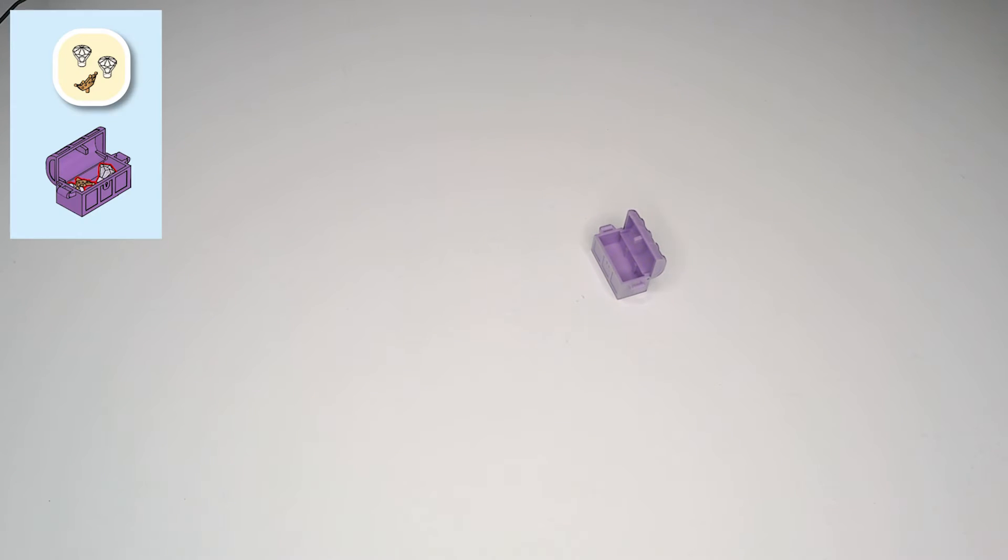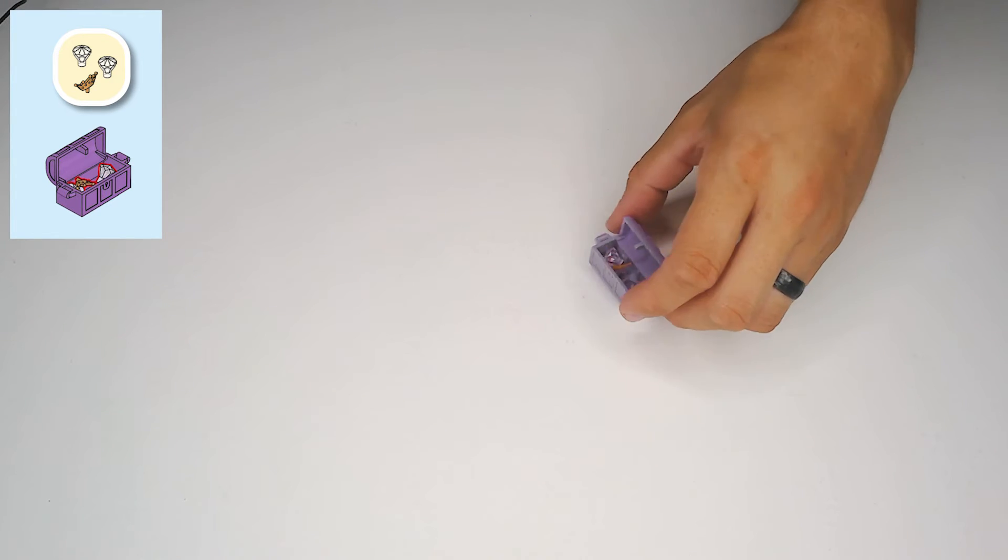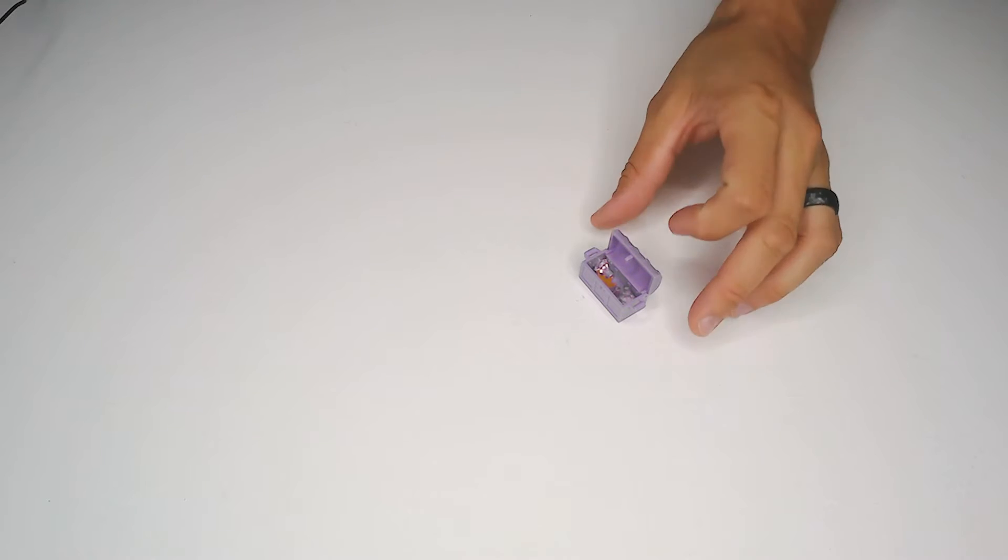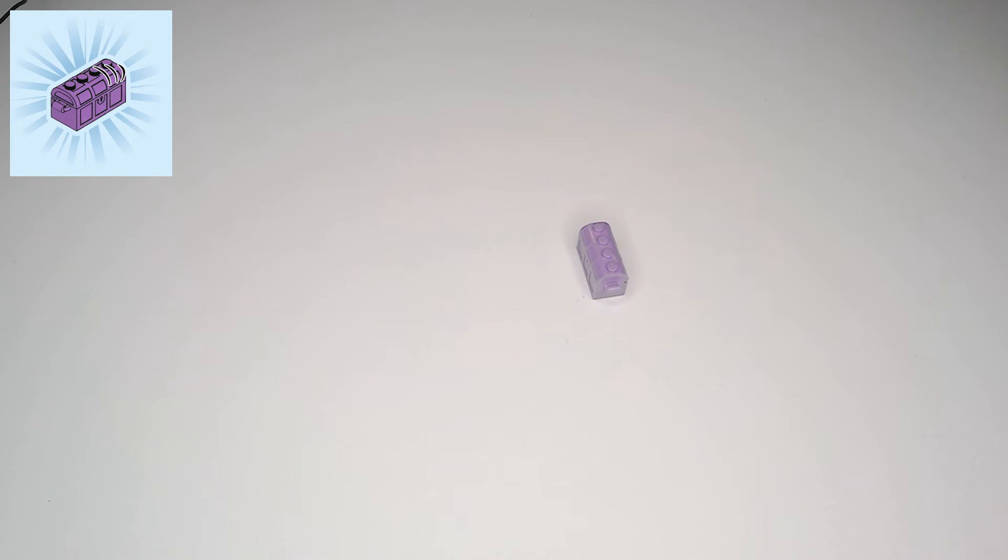So then it shows that there's some treasure that we're going to put in here. It shows that there's two of these clear white diamonds, but I actually got three. So I'm going to put all three of them in there and then there's a little golden crown. That's going in there too. That's a great little treasure. I'm going to close it. Don't let anybody steal our treasure. Put that aside.